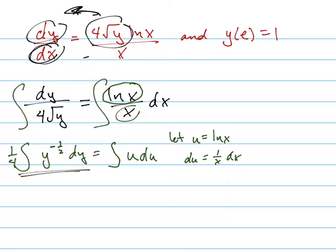So I can do this side without that. I can just do that with just normal integration rules, anti-derivative rules. So this is what? y to the positive one-half over one-half, which means times two.